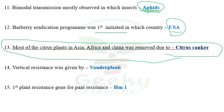The next question: vertical resistance was given by Van der Plank. Not only the term but the concepts of vertical resistance, horizontal resistance, simple interest diseases, compound interest diseases, AUDPC — all were given by Van der Plank. He is considered the father of plant disease epidemiology. A common question is to name a book written by Van der Plank. He wrote five books; the most famous is 'Plant Disease: Epidemics and Control,' written in 1963.